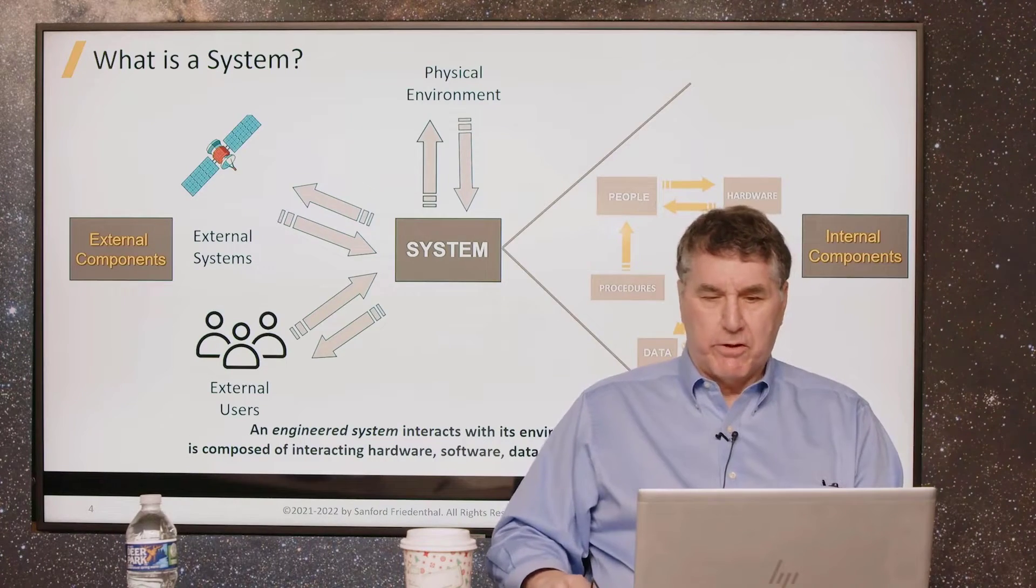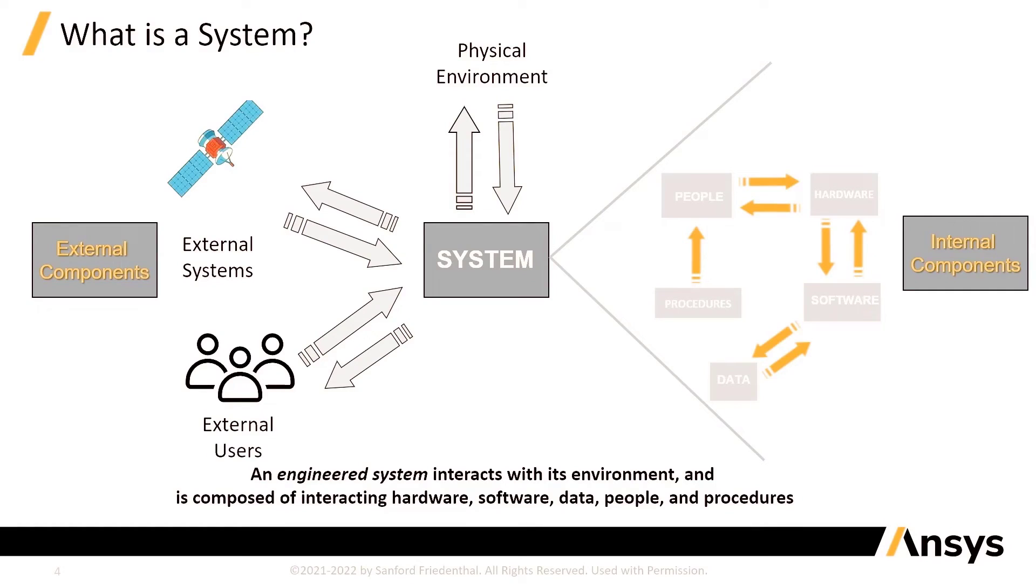We also note that the system is composed of these different elements of hardware, software, people, and data. They interact to enable the external interactions of the system. The pieces are working together to achieve the interactions that the system must provide, the external interactions.